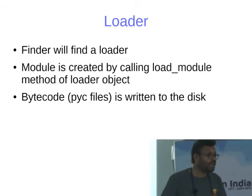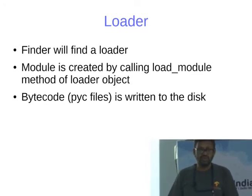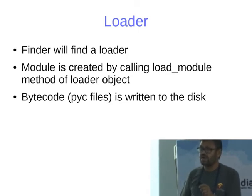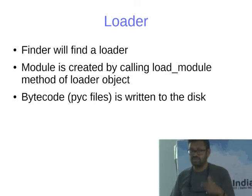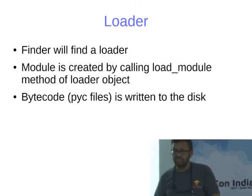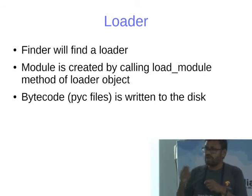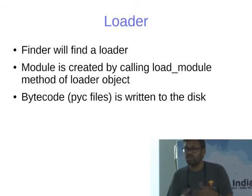You've seen .pyc files in your directory when you run code — those are the bytecode files. Before the loader compiles a file, it checks whether a .pyc file already exists. If not available, or if the source has changed since the .pyc was generated, it regenerates the .pyc file. One difference in Python 3: previously .pyc files were generated in the same directory as the source, but now a __pycache__ directory is created. This means multiple Python versions can coexist without overwriting each other's bytecode.